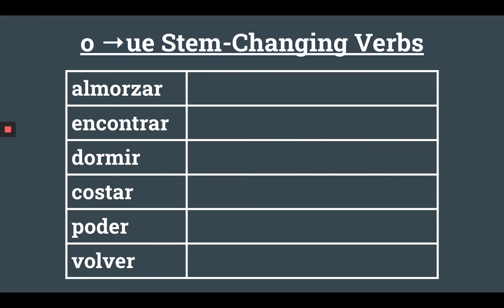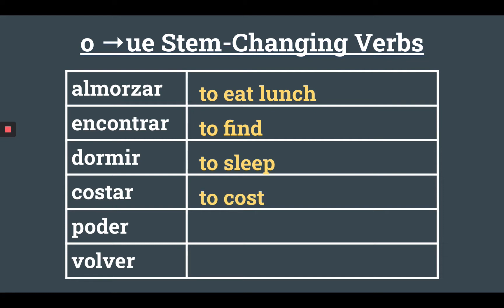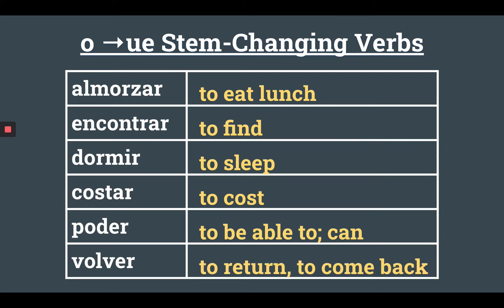These are some of the most common O to UE stem-changing verbs. We have almorzar, which means to eat lunch; encontrar, which means to find; dormir, which means to sleep; costar, which means to cost; poder, which means to be able to, or in other words, can; and volver, which means to return or to come back.